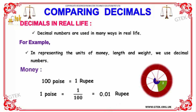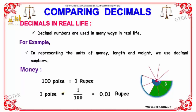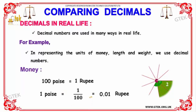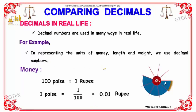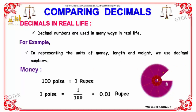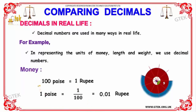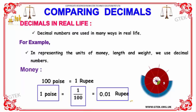Now let's talk about decimals in real life. Decimal numbers are used in many ways — for money, length, or weight. For example, in money: 100 paise equals 1 rupee, so 1 paise equals 1/100, that is 0.01 rupee.